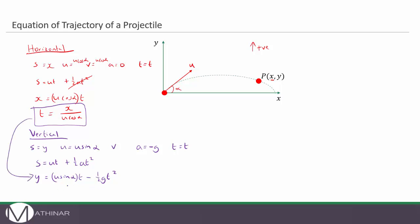So this will give us y equals u sin alpha multiplied by t which is x divided by u cos alpha minus a half g times t squared so if that's t, t squared would be x squared over u squared cos squared alpha.